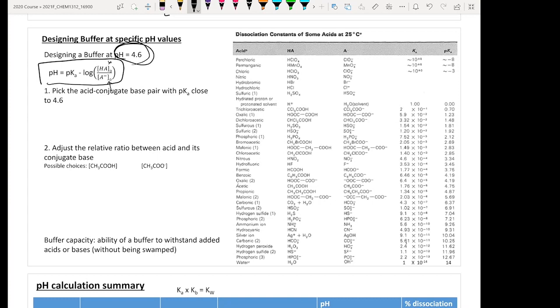So you want to find a system that has a pKa that's very close to your target pH. If you look at the table you have, you want to find something that's close to 4.6. Probably this one will be your choice, right?